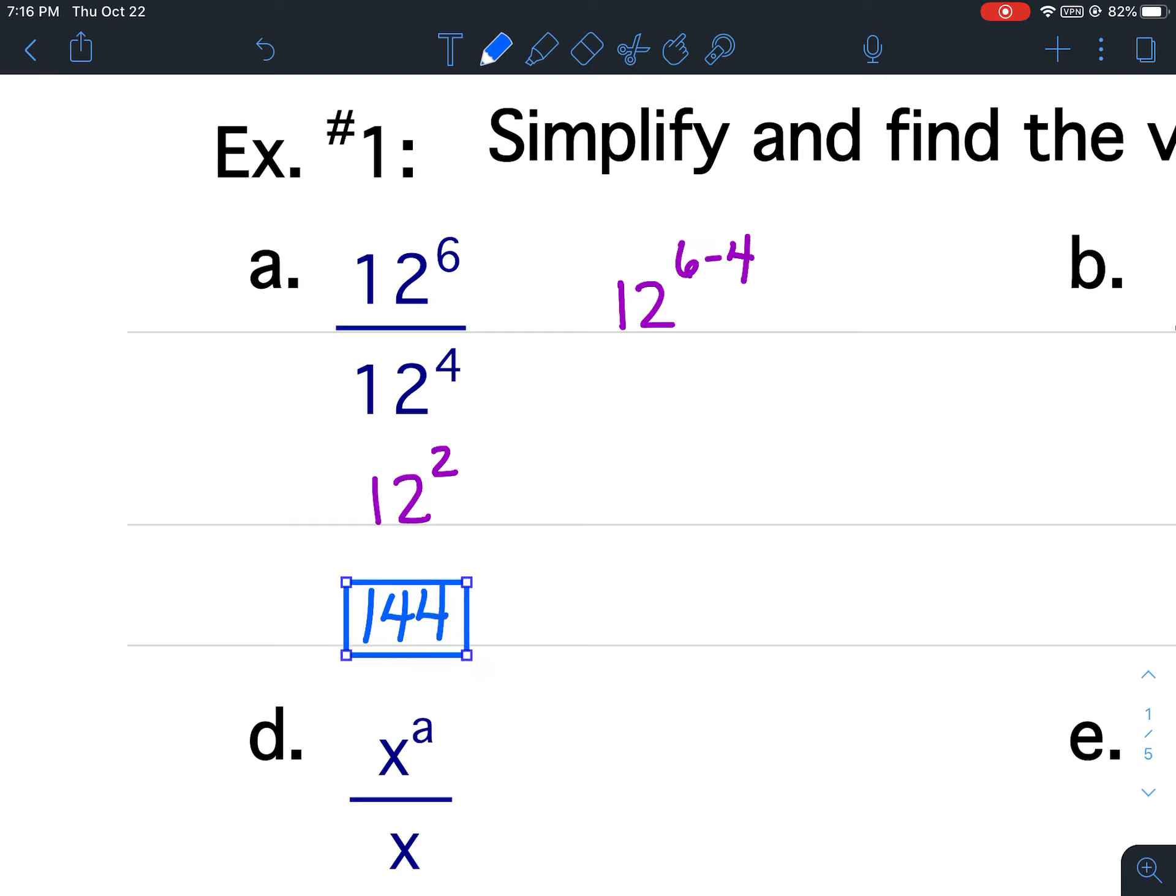Since the base and exponent were both digits, we were able to go one step farther to find the final answer of 144. So again, 6 minus 4 is how I got the 2, and 12 squared is 144.